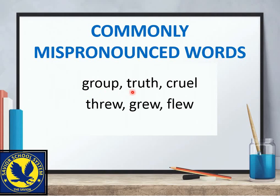عام طور پر 'group' کو غلط پڑھا جاتا ہے — یہ 'group' ہونا چاہیے۔ 'Truth' کو بھی صحیح طرح 'truth' پڑھنا ہے، 'cruel' کو 'cruel'۔ 'Through', 'grew', 'flew' — یہ سب long vowel sounds ہیں جن میں پوری length کے ساتھ اور پورے rounded lips کے ساتھ آواز نکالی جاتی ہے۔